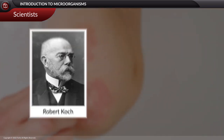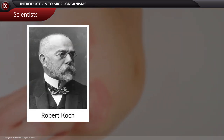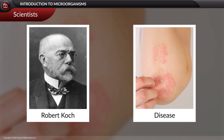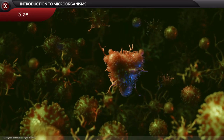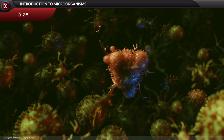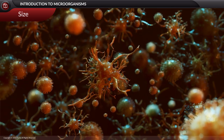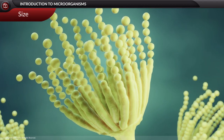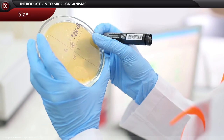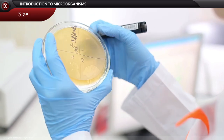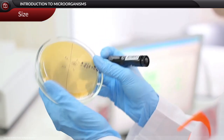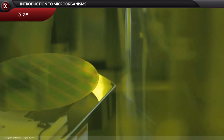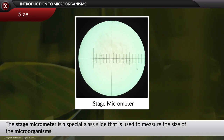Robert Koch was the first person to say that some microorganisms can cause diseases and are termed pathogens. Regarding size, microorganisms include almost all unicellular organisms and some multicellular organisms. The size of microorganisms varies from viruses, measured in nanometers, to bacteria, measured in micrometers.